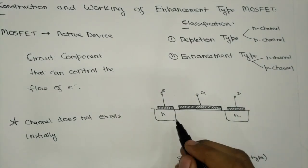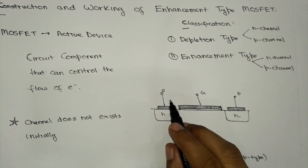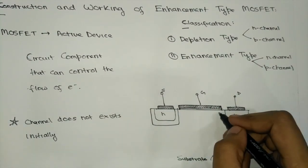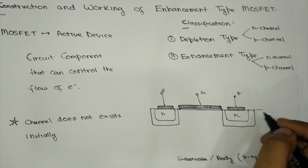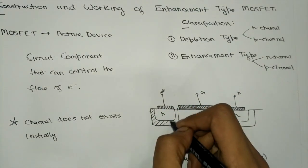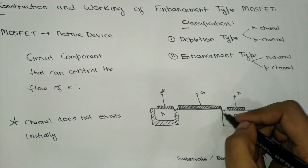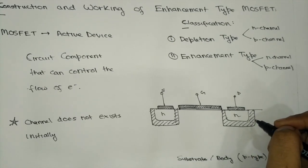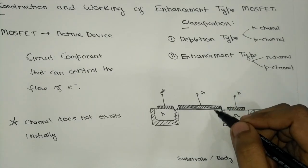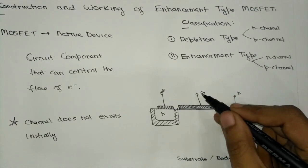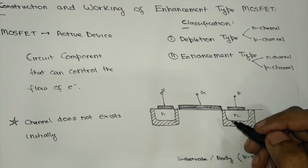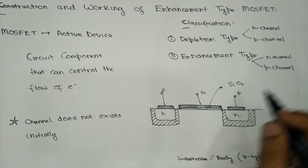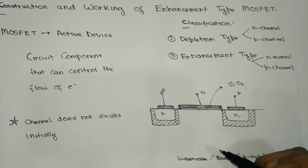Due to this N-type doping, a PN junction is formed between the substrate and the source, and between the substrate and the drain. A depletion region is formed due to the formation of these PN junctions. Also, the gate is connected to a conductor, but this conductor is not in direct contact with the P-type substrate.